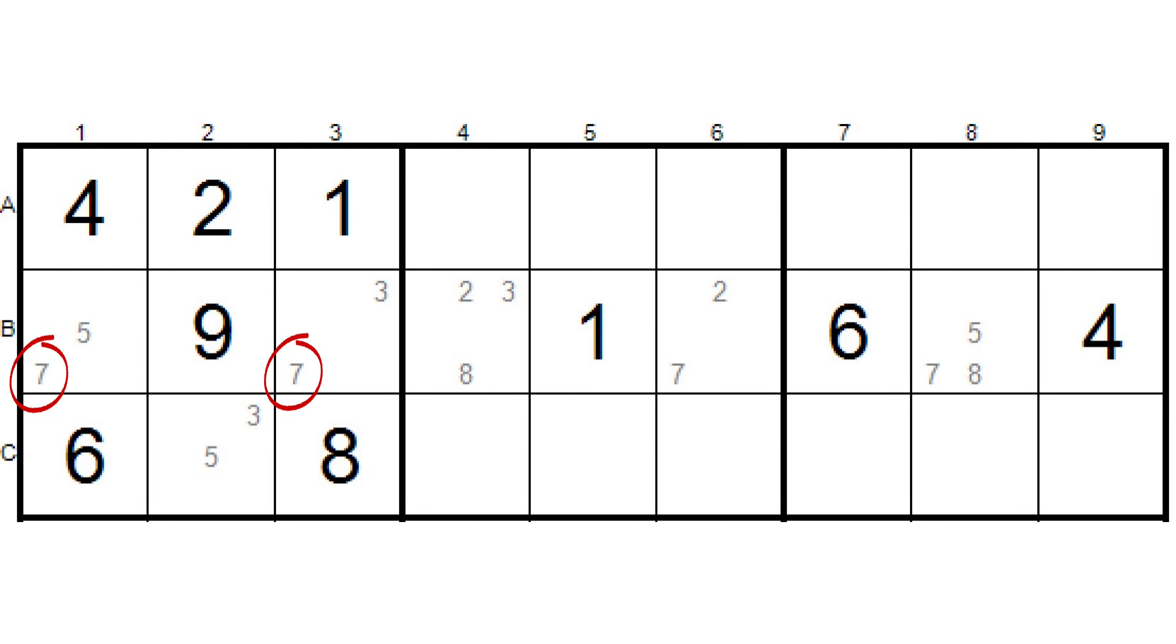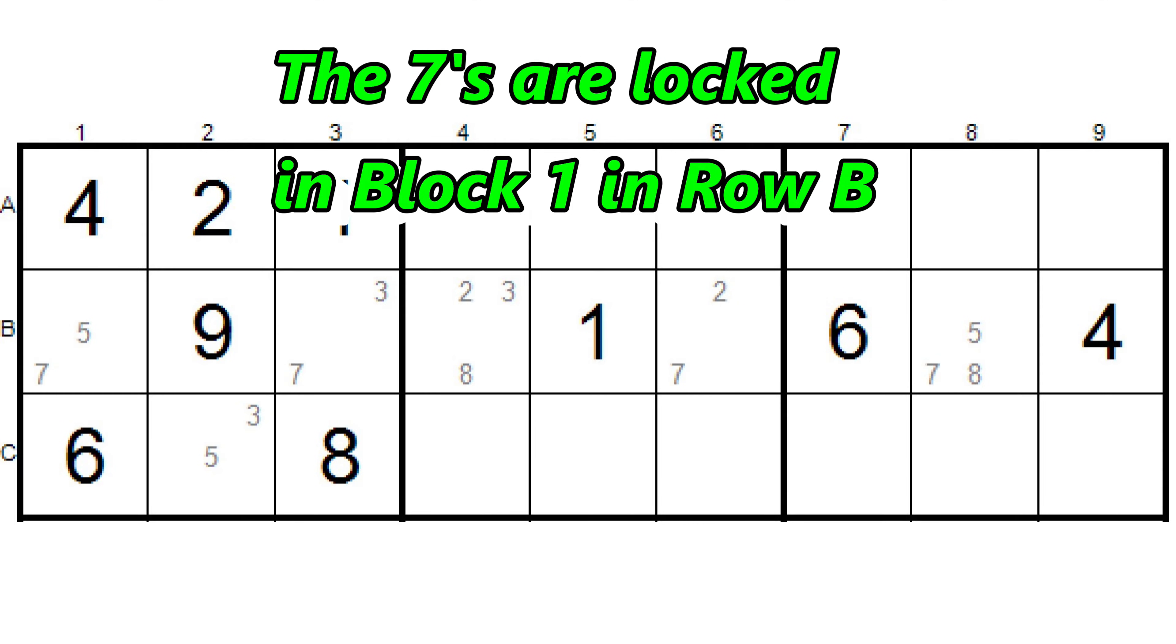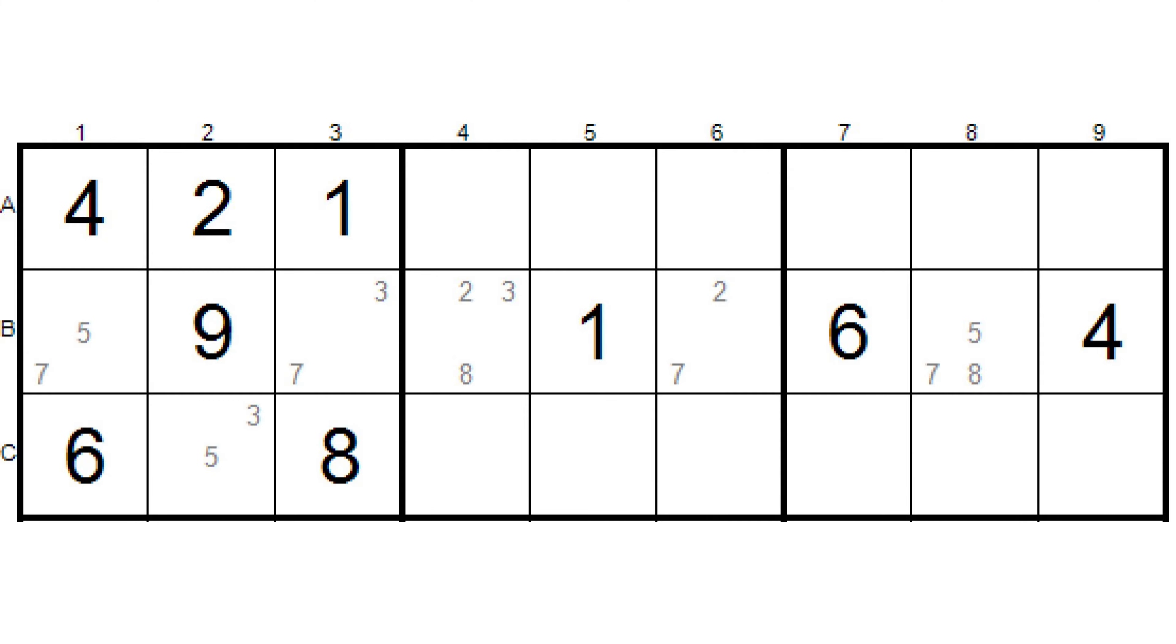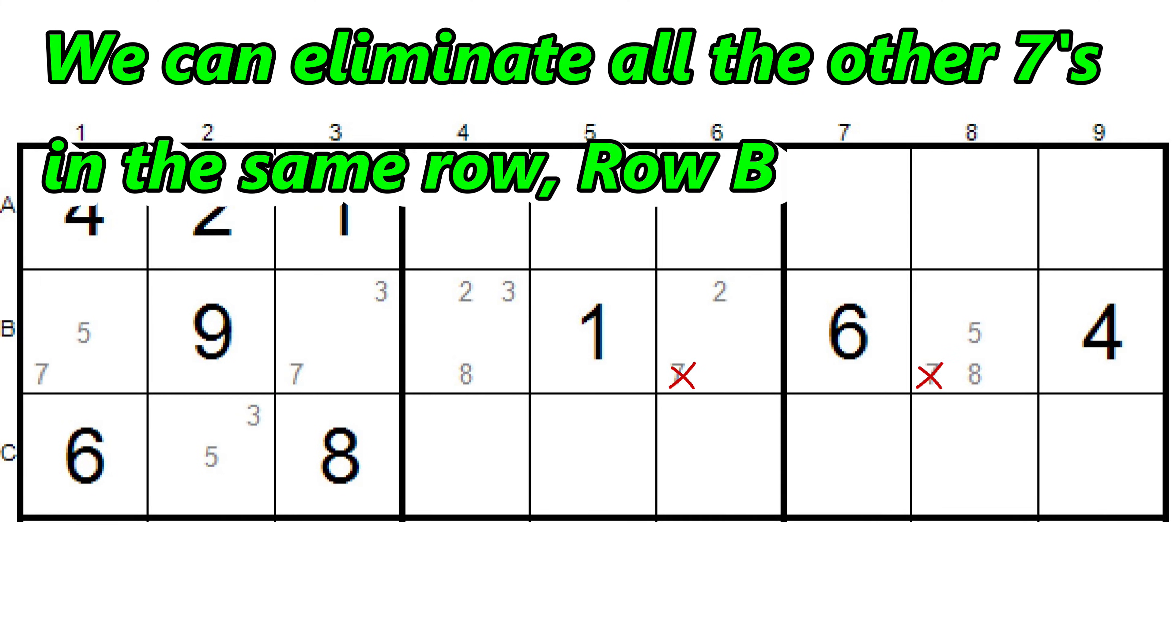If we see that, then we have what are called locked candidates. They are locked into that location. And now we can eliminate all the other 7s in the same row, row B.